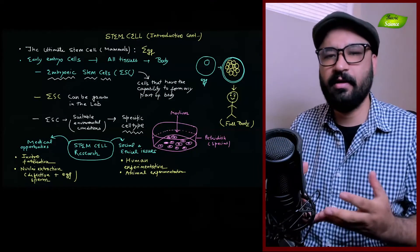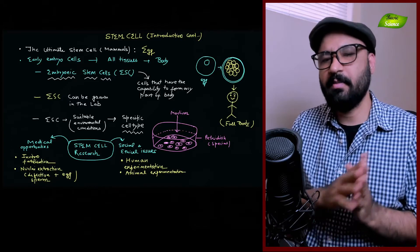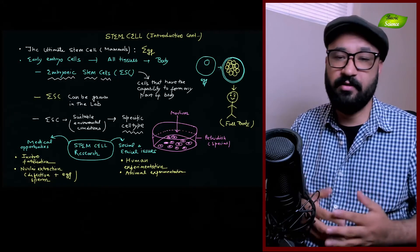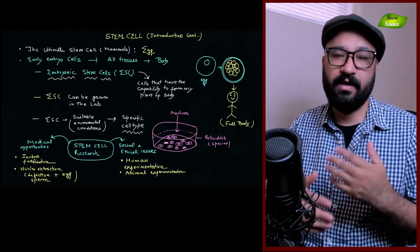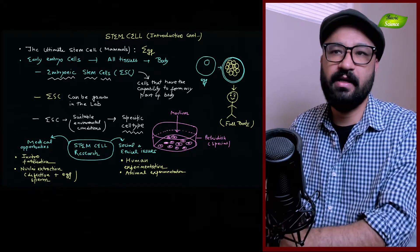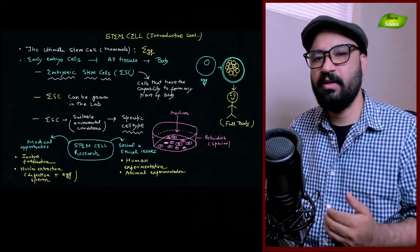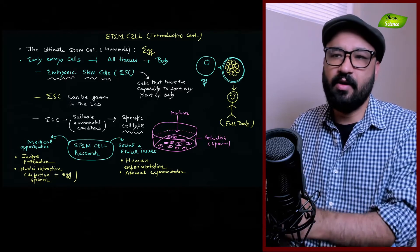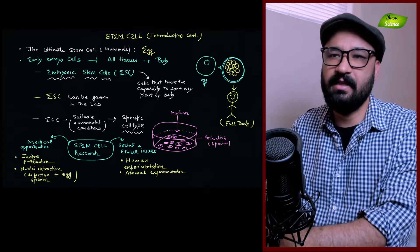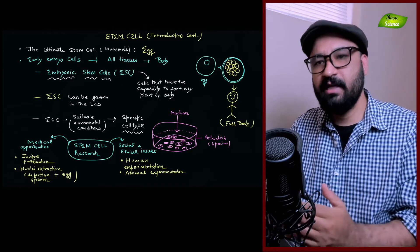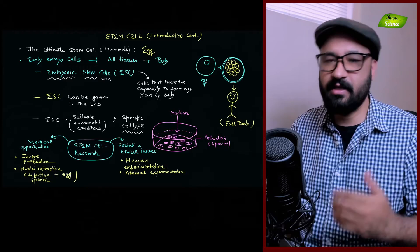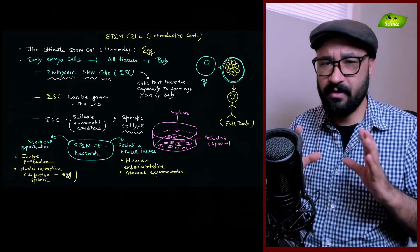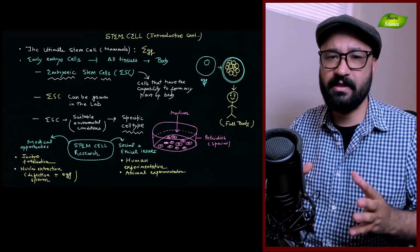Hi everyone. In this video we'll continue our discussion on stem cell research. We have discussed a couple of points in our previous video where we tried to explain what stem cells are and how they function. In this video, as you can see on your computer screen, I'm trying to explain how stem cells are important in stem cell research, how you can grow these cells in the lab, what kind of environment you need, and we'll also discuss the medical opportunities associated with stem cell research, as well as the social and ethical issues.